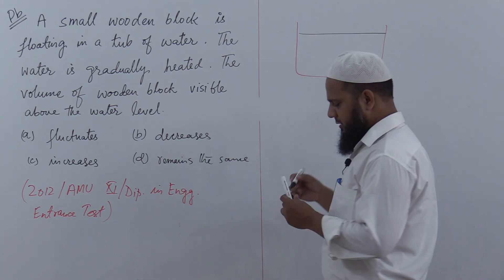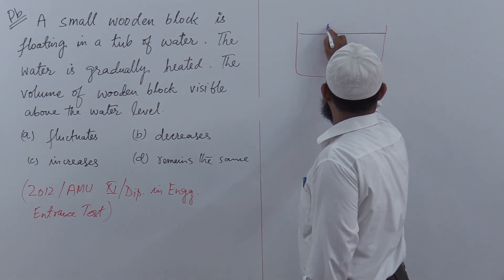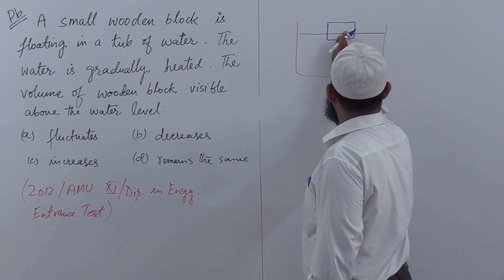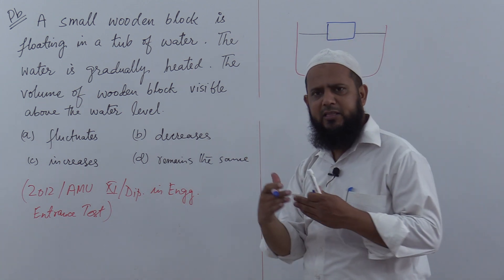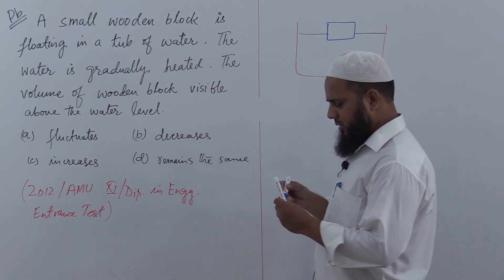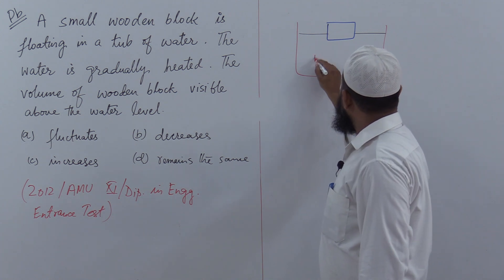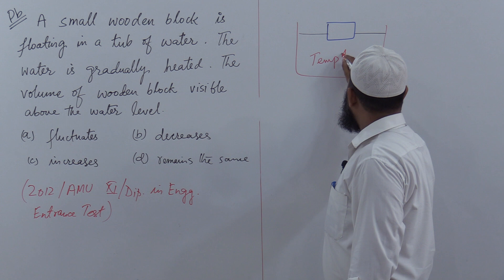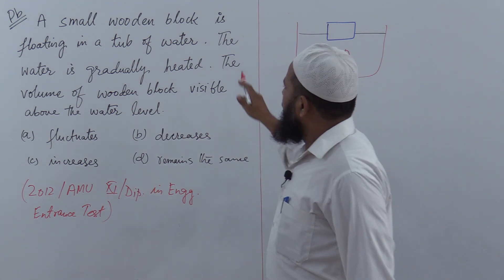Suppose this is the water level and a wooden block, suppose it's blue colored. Some part is in the water, some part is outside. Okay? Now, the temperature - after this, the water's temperature, we will gradually increase it. The water is gradually heated.